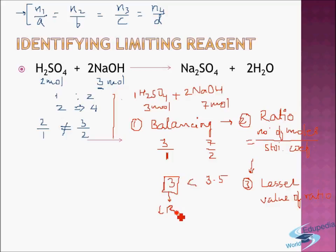The reagent with the lesser ratio value is the limiting reagent (LR). Here, H₂SO₄ is the limiting reagent while NaOH is present in excess. So the method is: given moles divided by stoichiometric coefficient — where stoichiometric coefficients come from balancing the reaction. Following these three steps, you can always identify the limiting reagent simply and clearly.